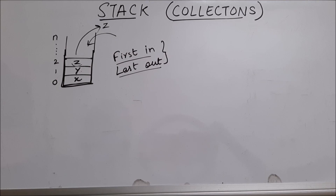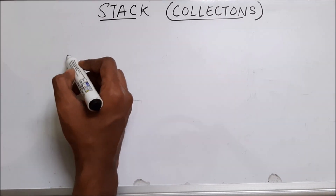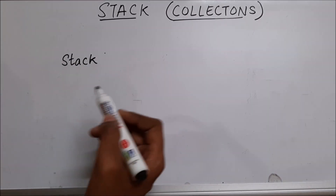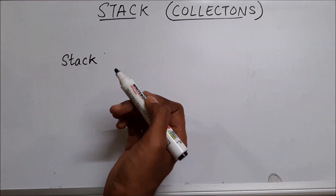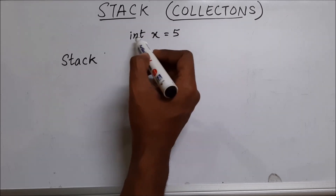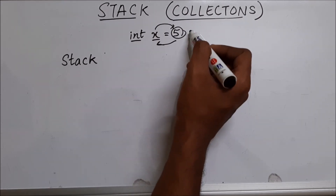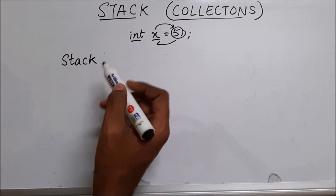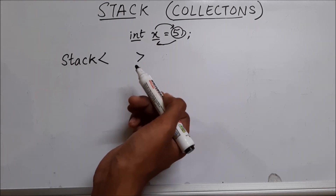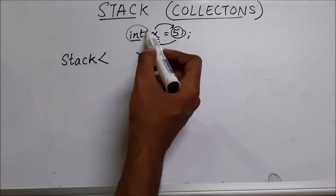Now let's see how we can create a stack in Java. We'll create a stack and look at various methods available with stack. We create a stack by using the keyword Stack — S is capital. Then we have to specify the type of things we are going to put inside the stack. For example, when we declare a variable int x equal to five, x is of type integer, so you can only put integers inside x. Similarly for stack, we use angle brackets and inside those angle brackets you specify the data type the stack is going to hold. If you want to put integer values, you type Integer and not int.